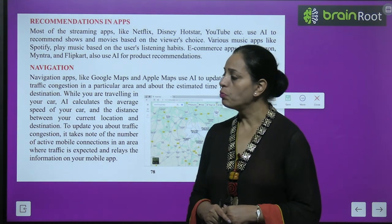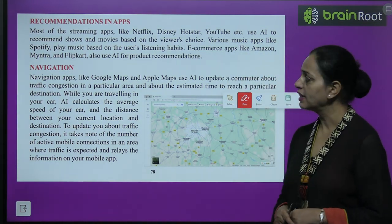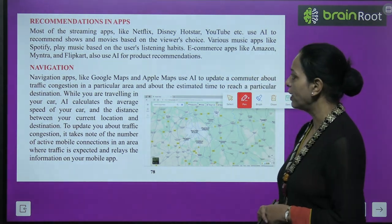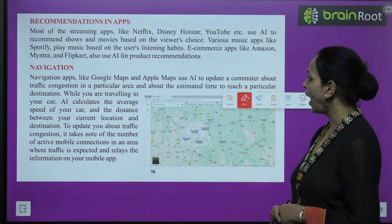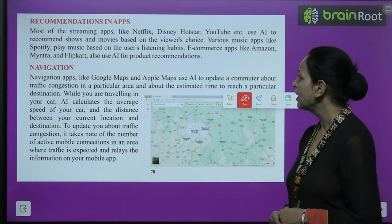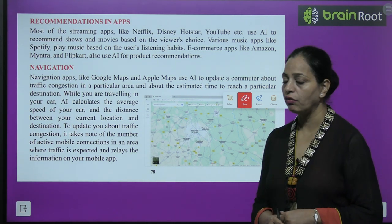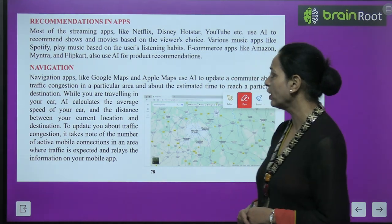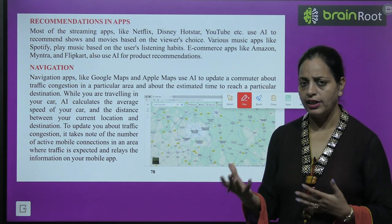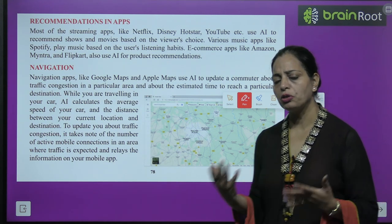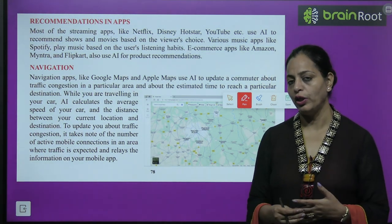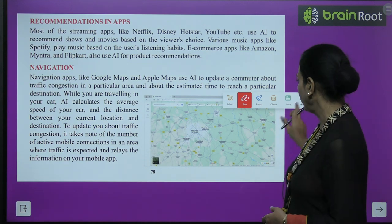Recommendations in apps: most streaming apps like Netflix, Disney Hotstar, YouTube, etc., use AI to recommend shows and movies based on viewer choice. Various music apps like Spotify play music based on the user's listening habits. E-commerce apps like Amazon, Meesho, and Flipkart also use AI for product recommendations. People do online shopping from Amazon or Meesho — you can do all of this from home with a smartphone or computer with the help of AI.